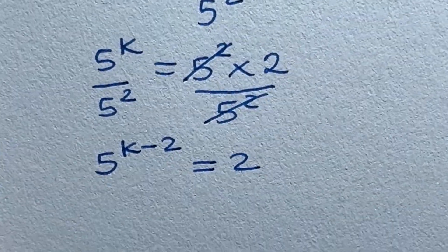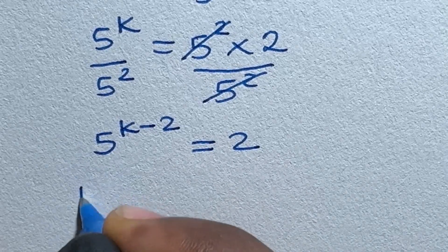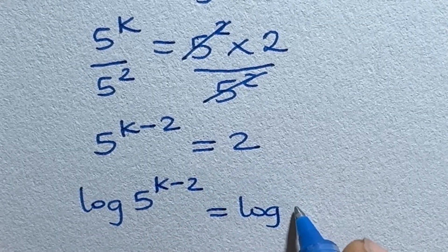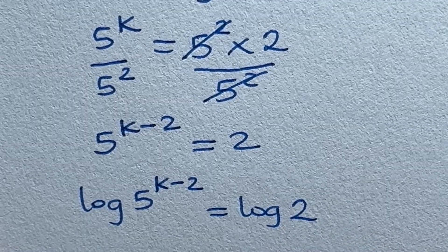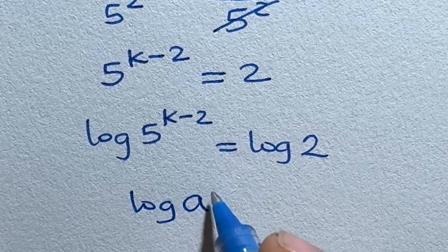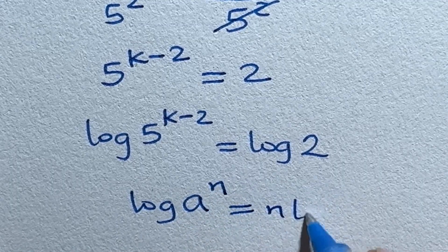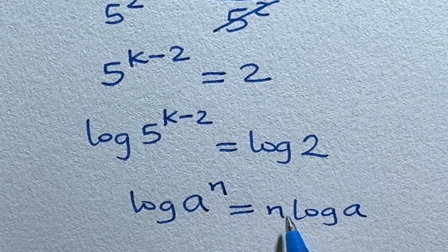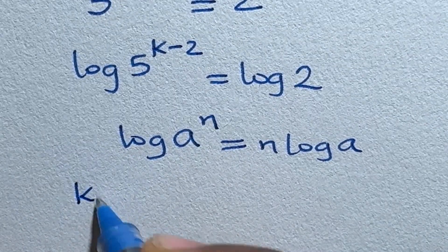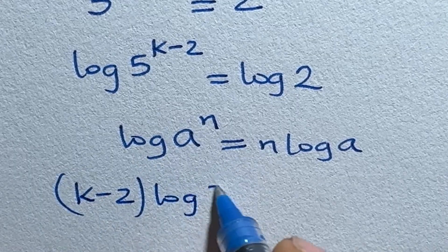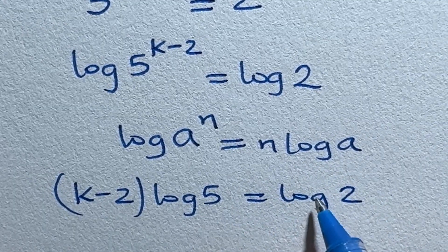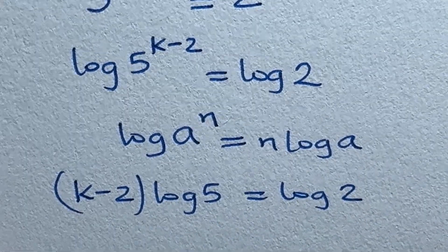To solve for k at this point, we need to take the logarithm of both sides. There is a basic law of logarithm that says you can bring the power k minus 2 to the front as a coefficient: if you have the logarithm of a raised to power n, you can express that as n log a. So this power now becomes a coefficient.